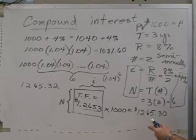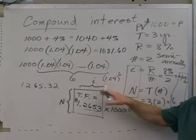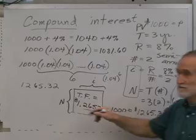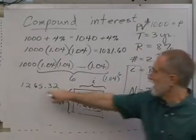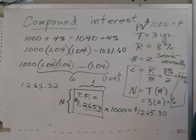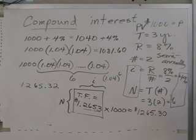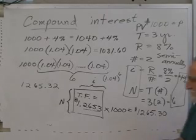By the way, if you have a scientific calculator and you'd rather do it this way, you can do that. Just show me on your test. 1.04 raised to the 6th times 1,000 equals that or whatever it is. And I'll give you full credit. You don't have to use the table. Alright? Alright?